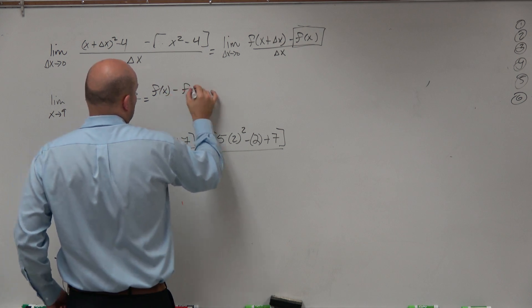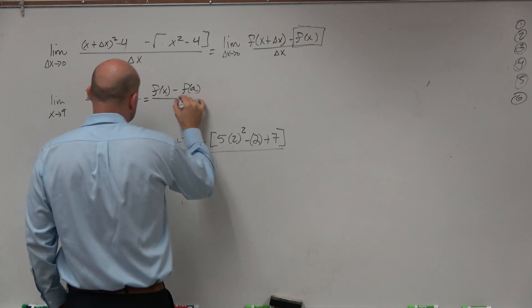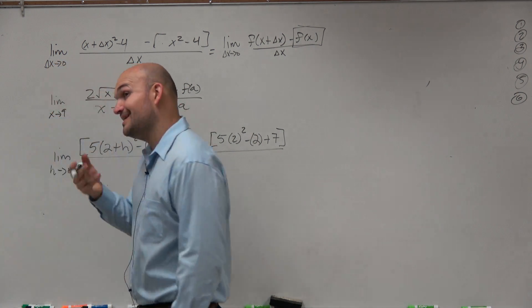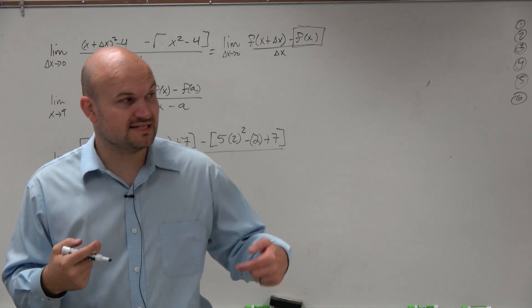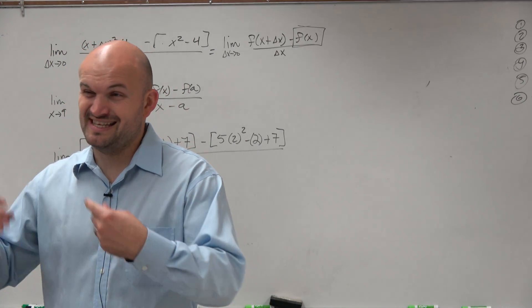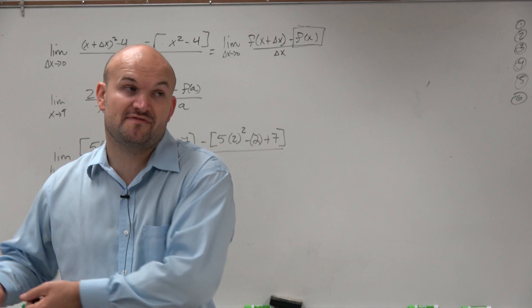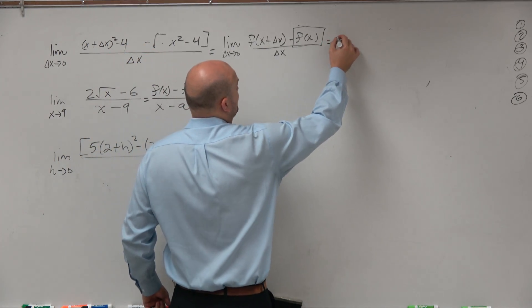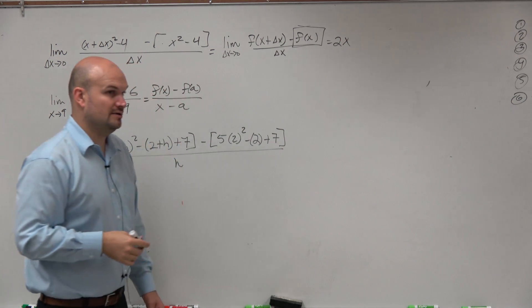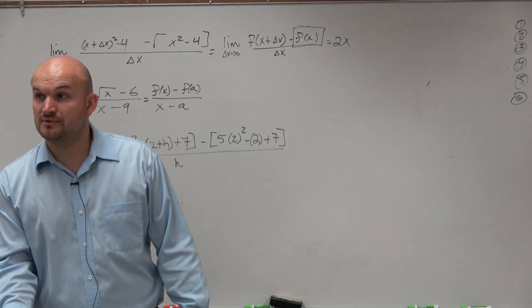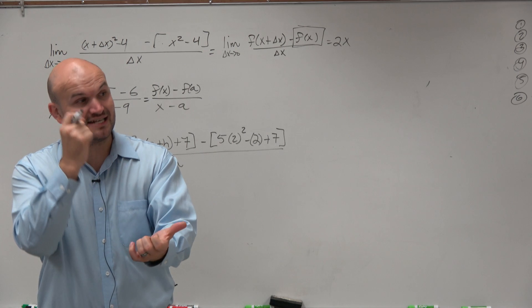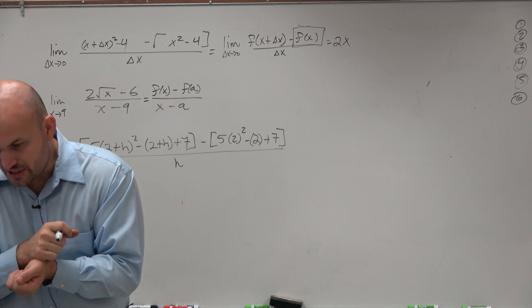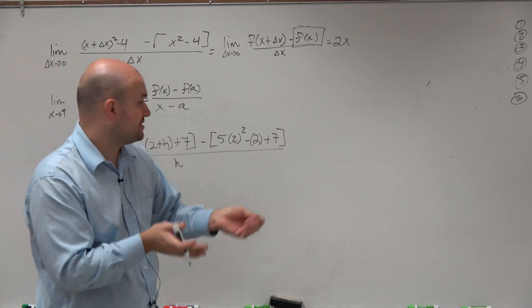f of x minus f of a divided by x minus a. Now this one's a little bit different because this isn't the derivative of a function. This is evaluating the derivative of a function at a point. So we're not going to be getting a function like we did on that one. We're going to be getting actually a value because you're actually finding the exact slope of the tangent line at this point.